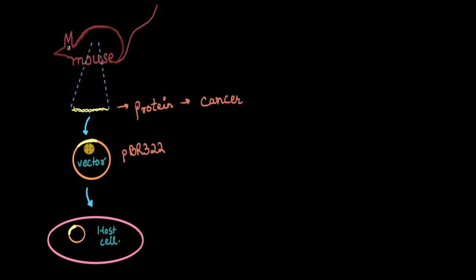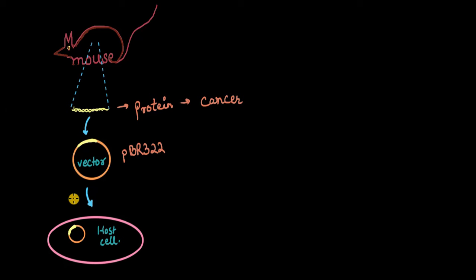Before going into the parts of pBR322, let me answer a common question: why do we need a vector — can't we directly put our gene of interest into a host cell? The answer is no, because a gene alone is not self-sufficient to replicate and express itself. The vector not only carries the gene we care about, but also provides the other parts necessary for this gene to get expressed inside any cell. So we simply cannot do without a vector.